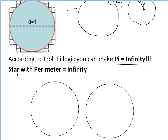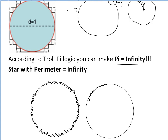According to troll pie logic, you can actually make π equal to infinity because of these infinite jagged corners. One example is a star shape with a perimeter approaching infinity. If you have a diameter-of-1 circle and draw a star around it with infinite jagged corners — even just a large but finite number of them — the perimeter is obviously going to be really, really large because you're going up and down or side to side a huge number of times. If you take that to infinity and ignore the line thickness issue, you'd go all the way around and it just looks like a circle.